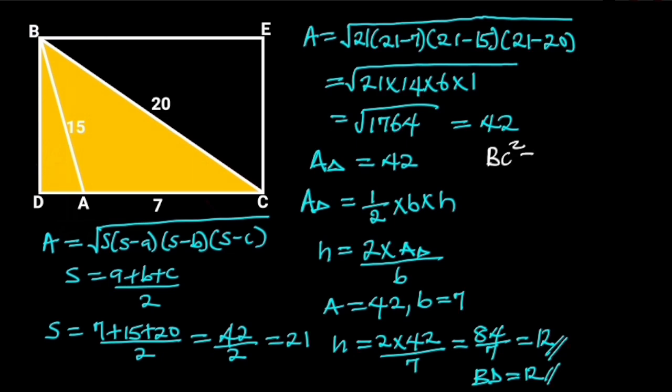BC squared is equal to BD squared plus DC squared. BC is equal to 20 and BD is equal to 12. It follows that 20 squared is equal to 12 squared plus DC squared.